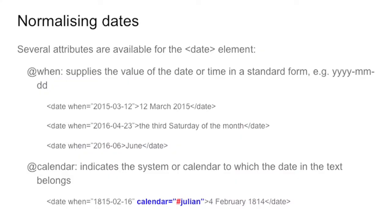There is also an attribute called 'calendar' that allows you to specify that you are following a specific calendar. The value of calendar is a reference — it is a pointer — meaning that somewhere in a TEI header, in particular in an element called calendar description, you will describe the calendar that has been used in your text. So you can have the Julian calendar, or a calendar that was used up to the 16th century in Florence. In your TEI header you explain that, give it an XML ID, and then using the calendar attribute, whenever you have a date, you can point to it and say this is the calendar I described in my TEI header.